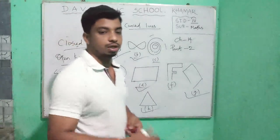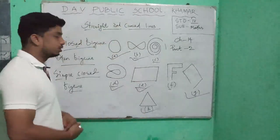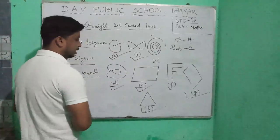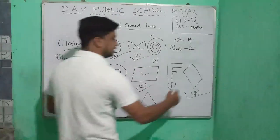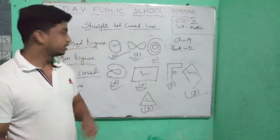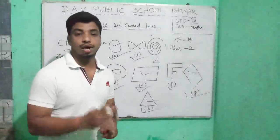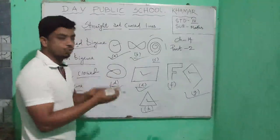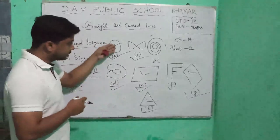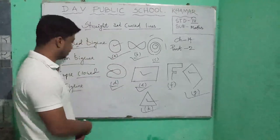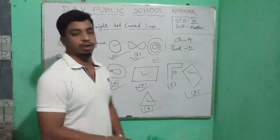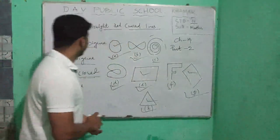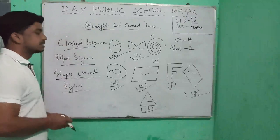Which figure is a simple closed figure? A, E, G, H are simple closed figures. Why are they simple? Because they do not intersect themselves. These figures are not intersecting with each other, so these are called simple closed figures. These are closed figures, open figures, and simple closed figures.